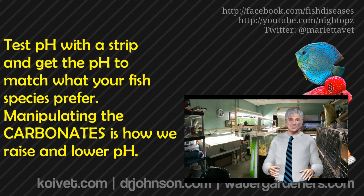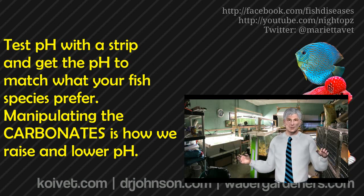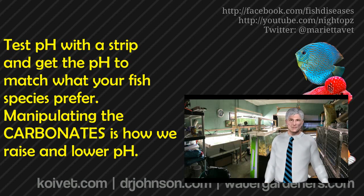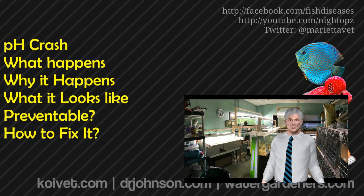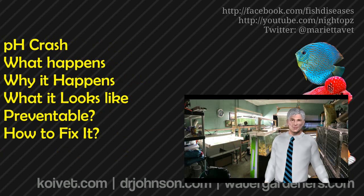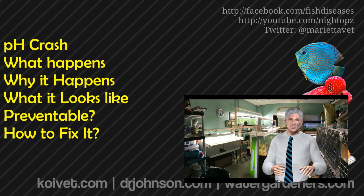pH is a measurement on a range from acid to alkaline. Alkaline is a higher pH and acid is a lower pH. The problems you run into are when the pH crashes. What does that look like? Why does it happen? How does it happen? What can you do about it? How can you prevent it? Lots of questions — let's get started.